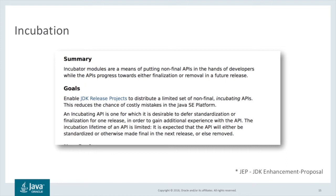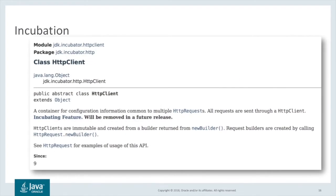An incubating API is expected to be relatively short-lived. In all cases, it will be removed in a future release — either because it is standardized, in which case its module and package name will change, or if some fatal design flaw is discovered, then it will be dropped. Looking at the HTTP client class from JDK 9 or JDK 10, you will see that its module and package name are clearly identified as being incubating. There is also a warning that the API is an incubating feature and as such will be removed in a future release. All this helps to notify the developer that if they are using this API, they will need to take some action when updating to a future JDK release.